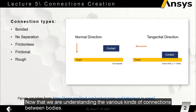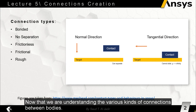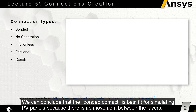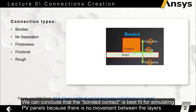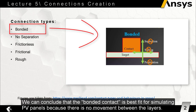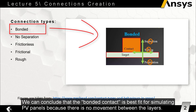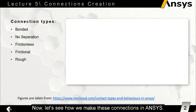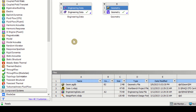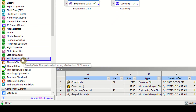Now that we understand the various kinds of connections between bodies, we can conclude that the bonded contact is the best fit for simulating PV panels, because there is no movement between the layers. Now let's see how we make these connections in ANSYS.